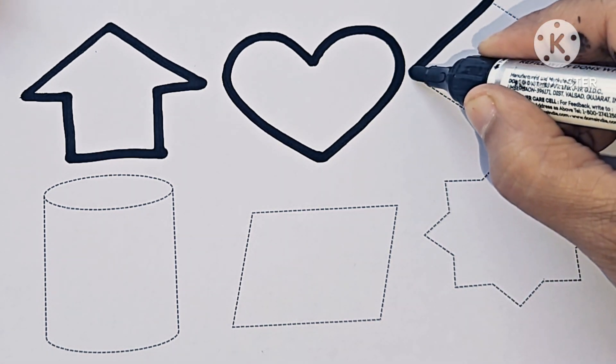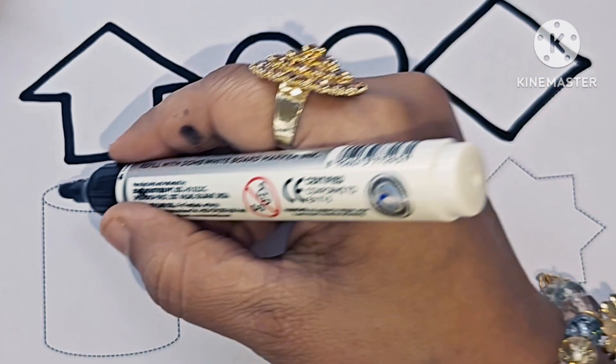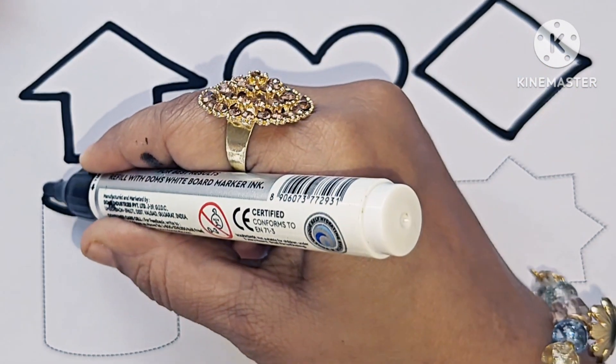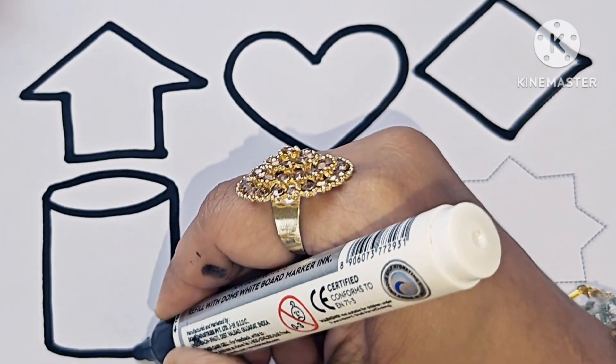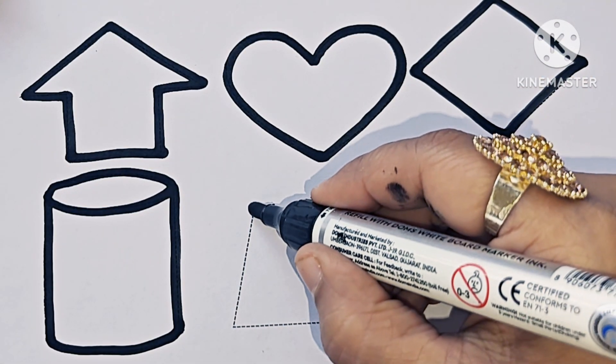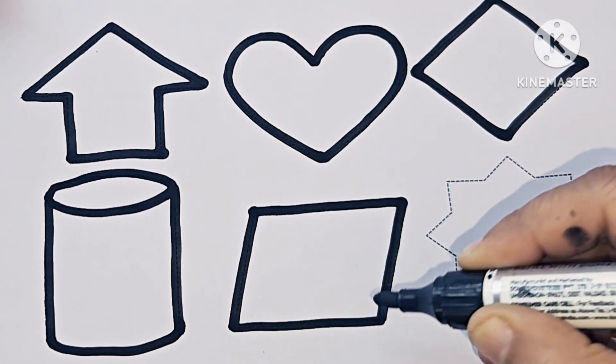Heart shape. Rhombus. This is cylinder. Parallelogram.